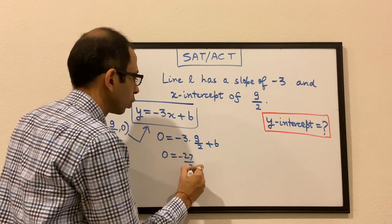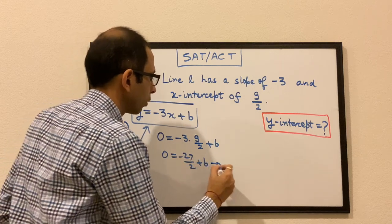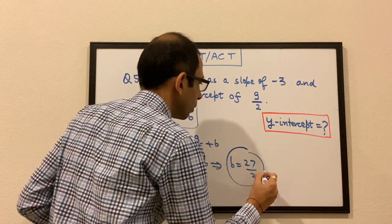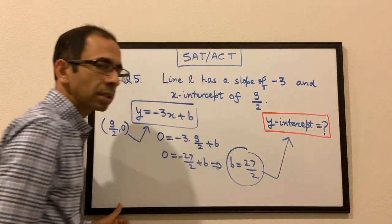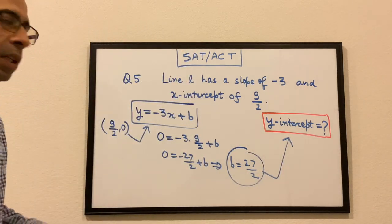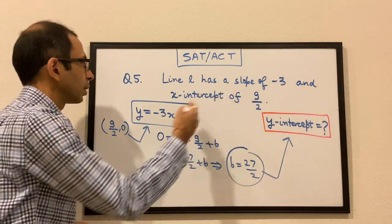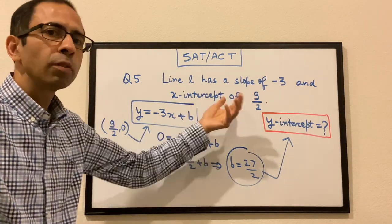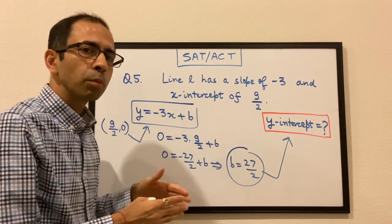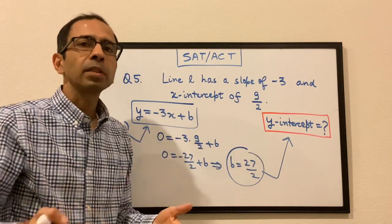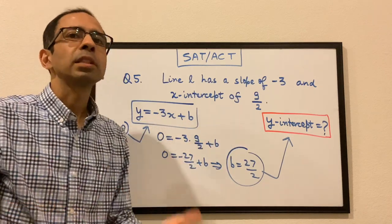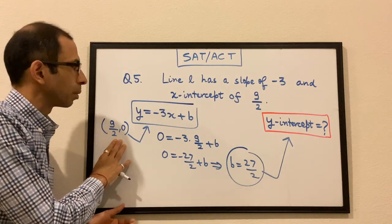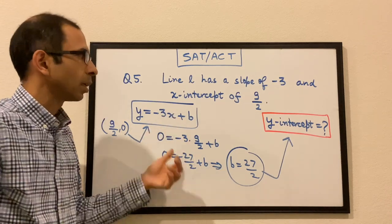Solving: 0 = −27/2 + b, so b = 27/2. That is the y-intercept. The key insight is that the x-intercept of 9/2 directly gives us the point (9/2, 0) on the line, which we plug into the slope-intercept equation to find b.